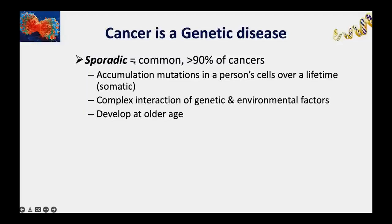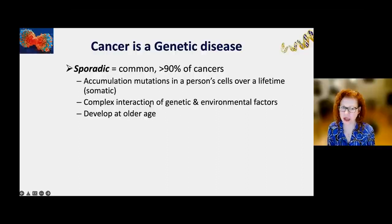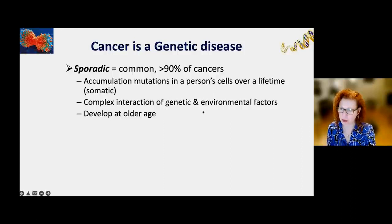Cancer is a genetic disease, but that does not mean all cancers are inherited. The vast majority of cancers are what we call sporadic—common cancers that result from the accumulation of mutations in genes involved in these safeguards, acquired over a person's lifetime. There's a complex interaction between genetic and environmental factors. Common sporadic cancers typically develop at older age—in your sixties, seventies, eighties, or nineties.